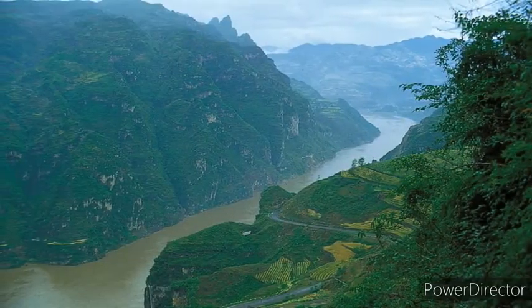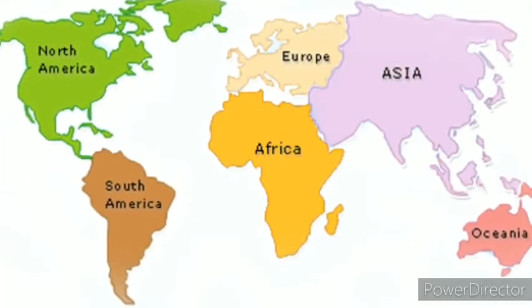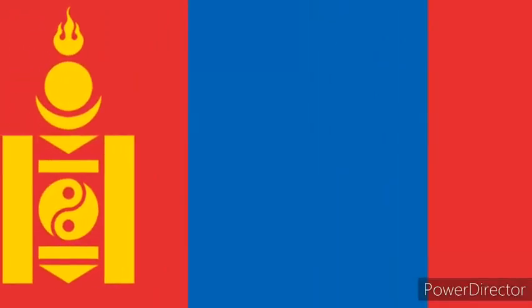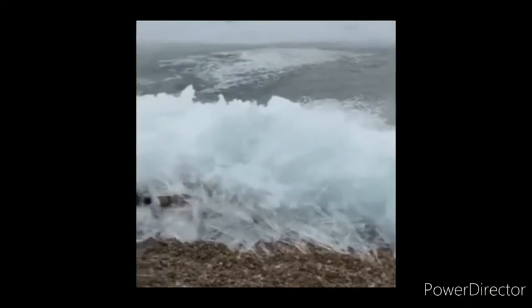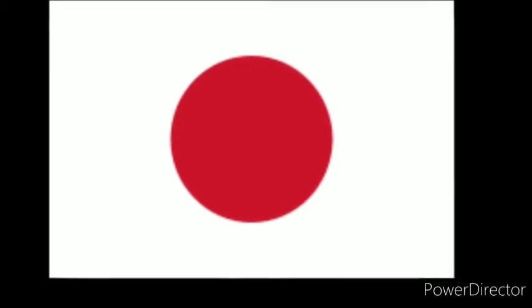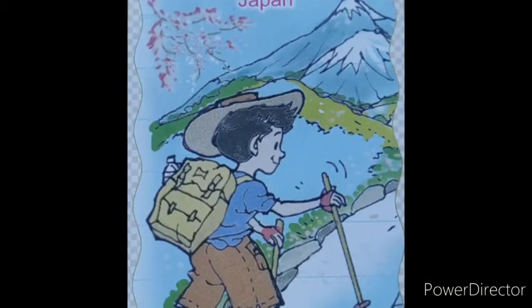Now we will see the flags of some countries of Asia. First one is Mongolia — Mongolia's capital city is Ulaanbaatar. Second one is Russia — Russia's capital city is Moscow. Visit Lake Baikal when you go to Russia.